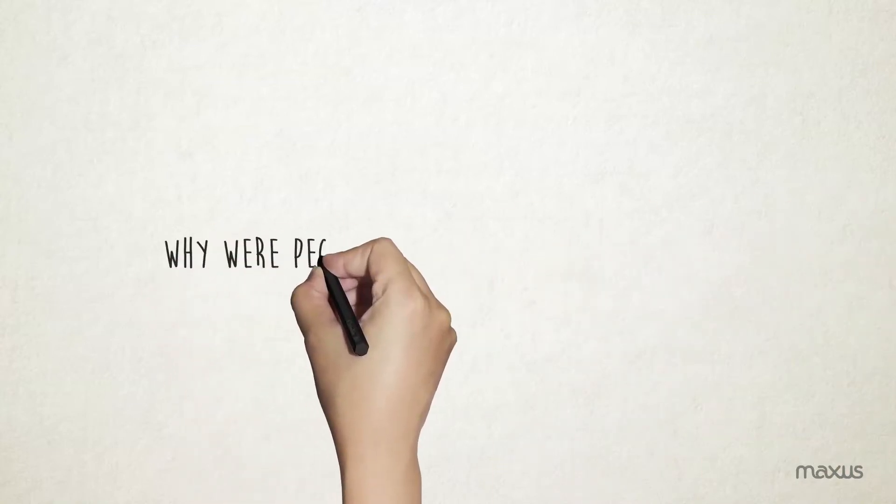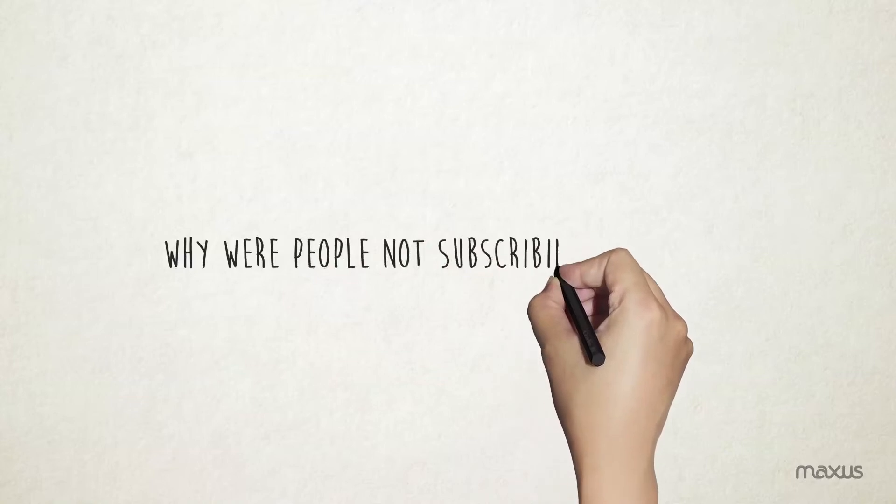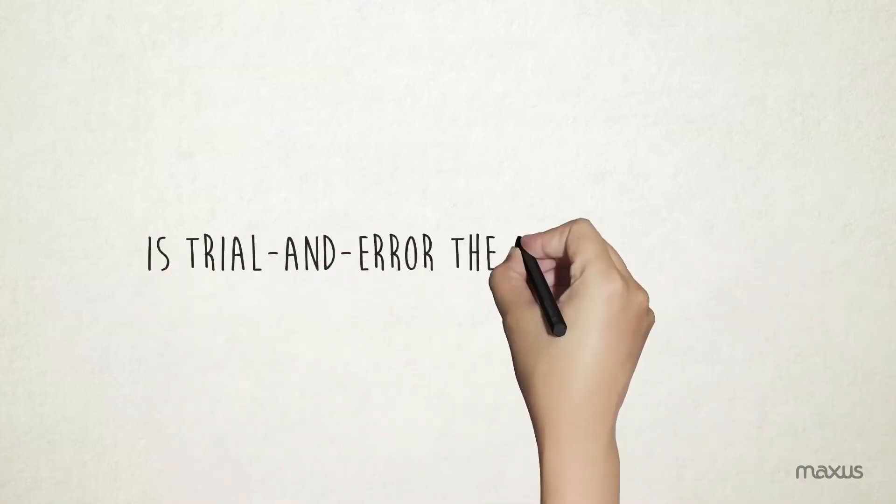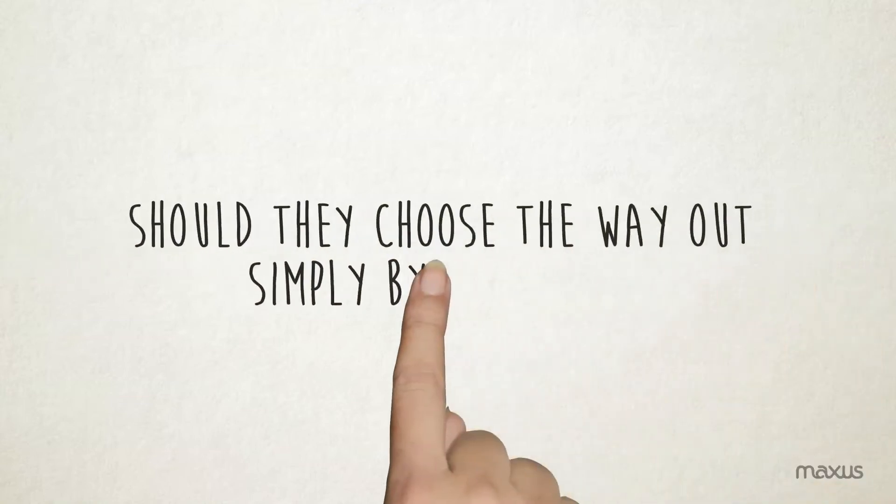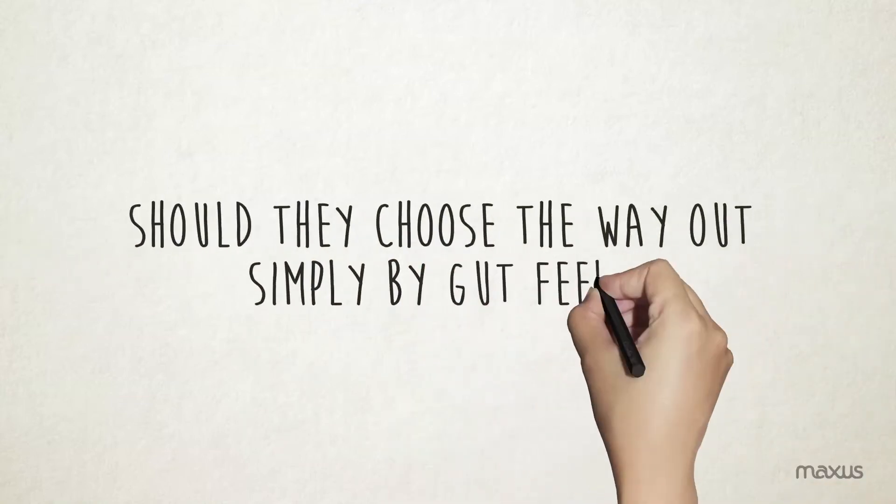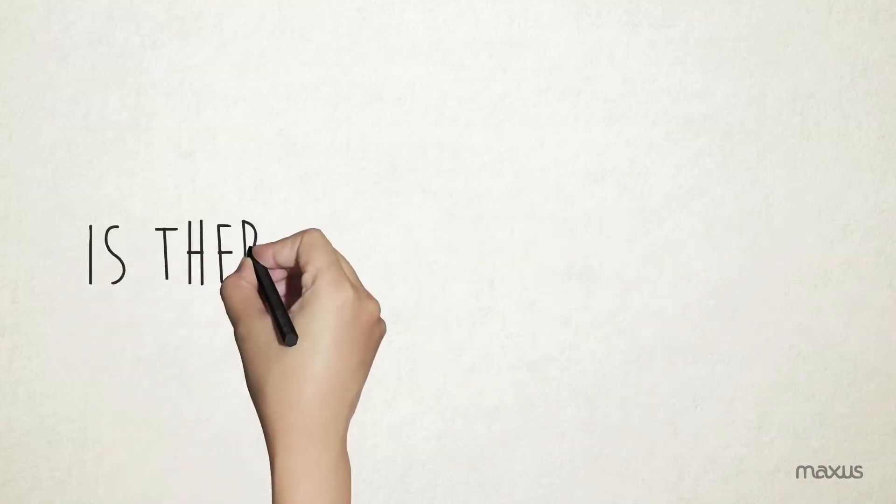Since the offering was best in class, why were people not subscribing anyway? Is trial and error the only way out? Or should they choose the way out simply by gut feel? Or is there a scientific way?